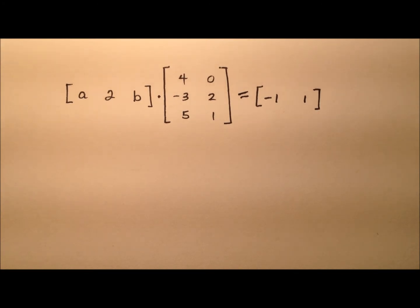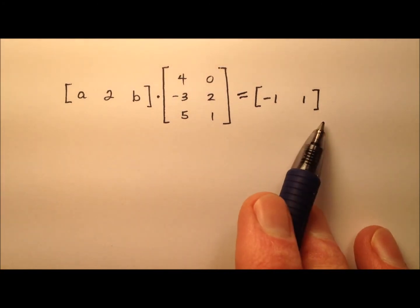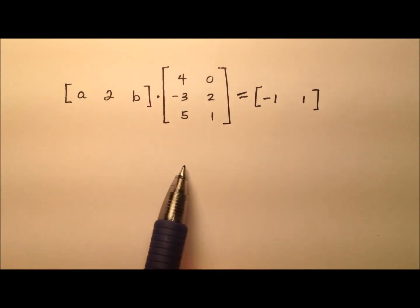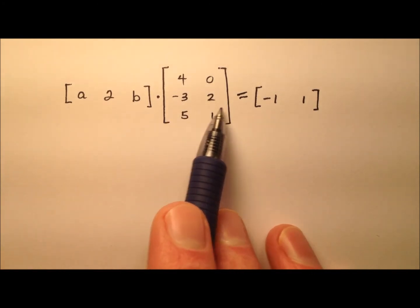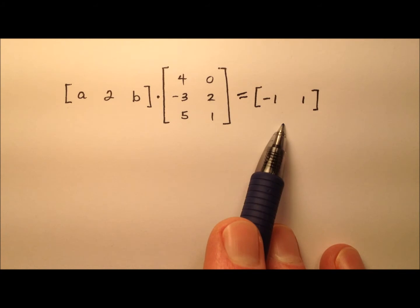In this example, it looks like we have ourselves a matrix equation. On the left side of this equation, it looks like we have matrix multiplication, and on the right side we have our product matrix.